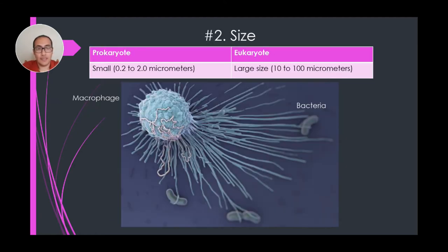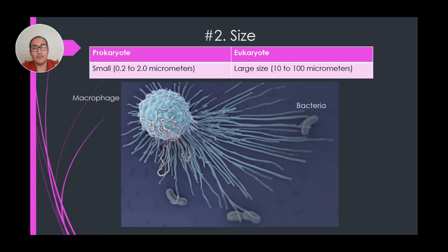Number two: size. Prokaryotes are a lot smaller than eukaryotes. We're talking micrometers — that's 10 to the negative 6 meters — so very, very small. You can only see them under a microscope.